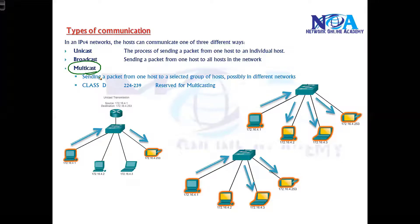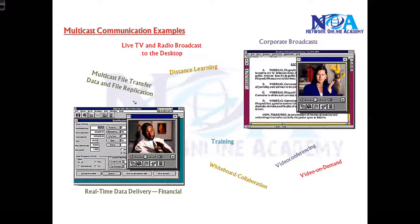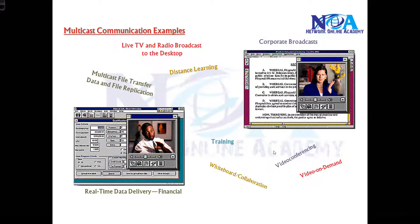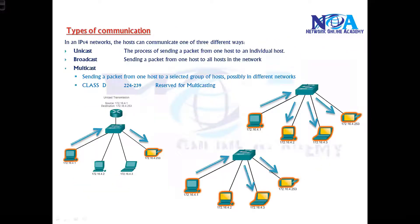There are scenarios in a network where you may want to send specific traffic or packets to selected individuals. In production networks, examples of multicast applications include corporate broadcast messages, online distance learning, live TV or radio broadcasts on your computer, video conferencing applications, video on demand, and websites. These are all examples of multicasting.